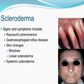Morphea: this variety features oval-shaped thickened patches of skin that are white in the middle with a purple border. Linear scleroderma: this variety, which is more common in children, features bands or streaks of hardened skin over one or both arms or legs, or on the forehead. Systemic scleroderma, also called systemic sclerosis, affects not only the skin but also the blood vessels and internal organs.